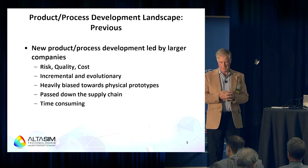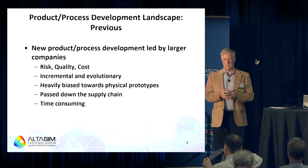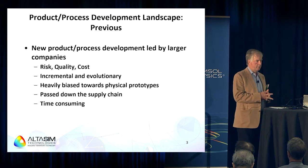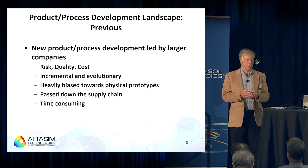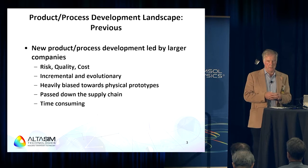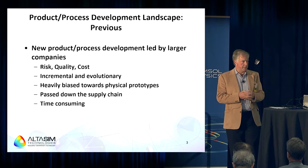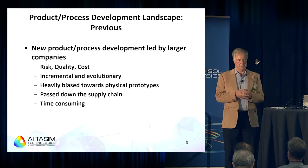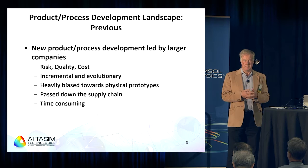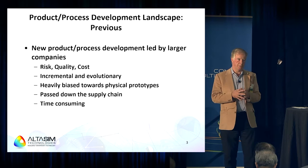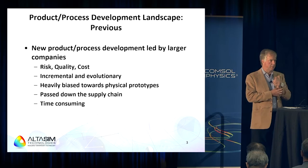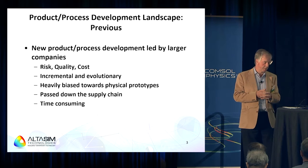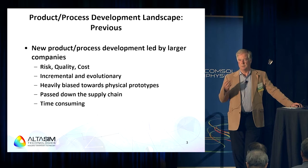Looking back at where product and process development has traditionally taken place, it was generally led by larger companies who had the infrastructure and finances to support it. They were focused on reducing risk, increasing quality of product, and reducing the cost of production. Things tended to be done incrementally — everything was evolutionary — with a heavy bias towards using physical prototypes with a lot of testing and evaluation. That cascaded down the supply chain to tier one and tier two suppliers. Everything became time-consuming from the initial concept to final implementation, and prototypes were expensive and time-consuming to build and test.